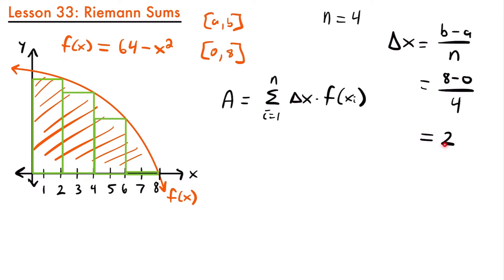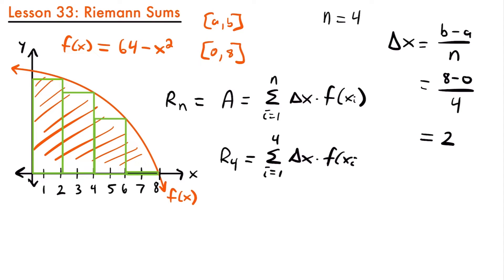Delta x equals 2, so our first rectangle goes from 0 to 2, the second from 2 to 4, the third from 4 to 6, and the last from 6 to 8, each with a width of 2. We can also write this area formula as R sub n, meaning a Riemann sum using right endpoints with n rectangles. So here we have R sub 4, equal to the sum from i equals 1 to 4 of delta x times f(x sub i), and we know delta x equals 2, which we can pull outside of our sum.